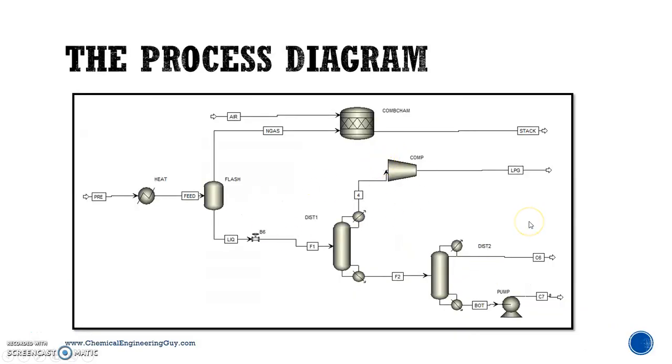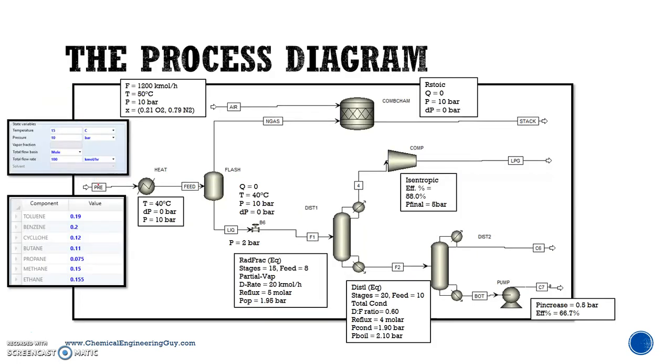This is our process diagram, a flow sheet where we'll be adding streams and unit operations or blocks. Let me talk about our process. We have the inlet or pre-feed here which has temperature, pressure, flow rate, and stream composition conditions - that's the only thing we need to define a stream.